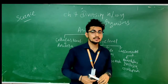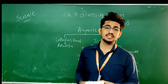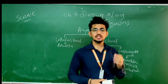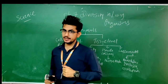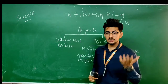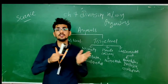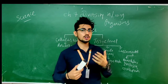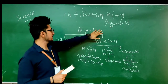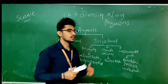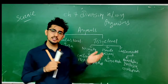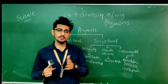Good morning to all of you. This is our Part 2 video of Chapter 7, which is Diversity in the Organism. If you remember what we have seen in our first video, we covered the Kingdom Plantae, which is divided into 5 divisions having different levels of differentiation at the tissue level or organ level. In this video, we are going to see the fifth kingdom, which is Animalia, and we will see the different levels of divisions at the tissue level, organ level, and other types.